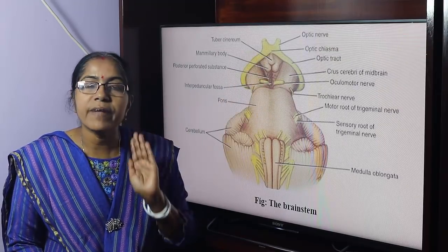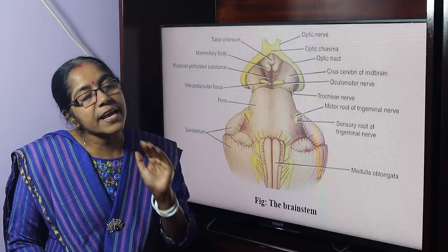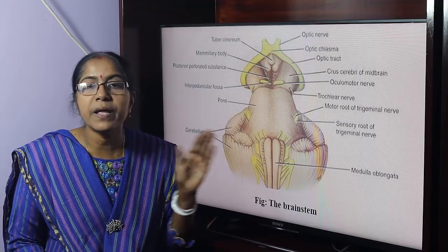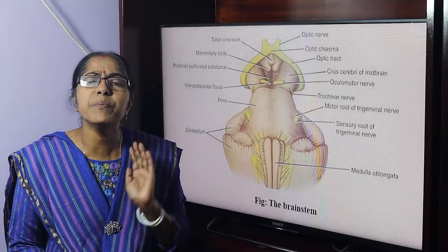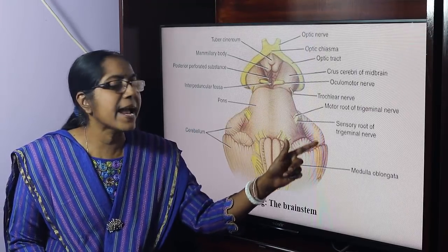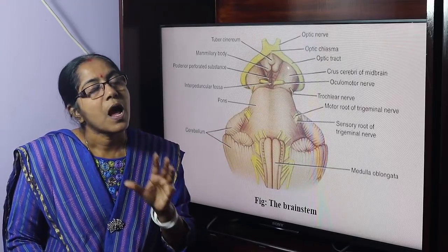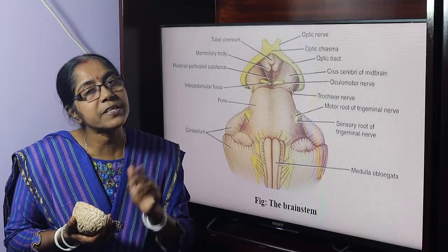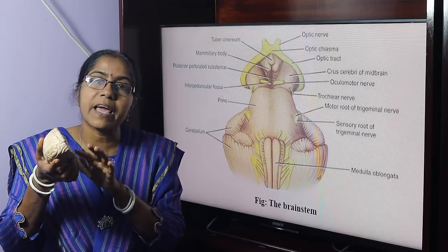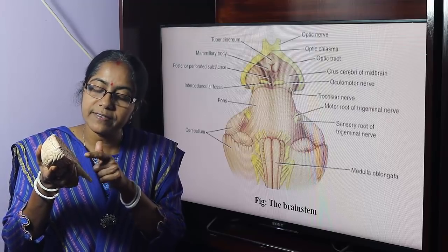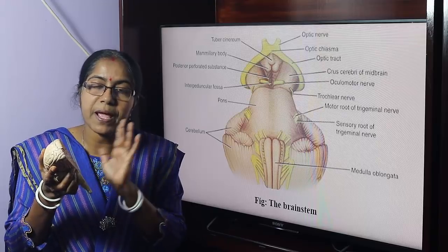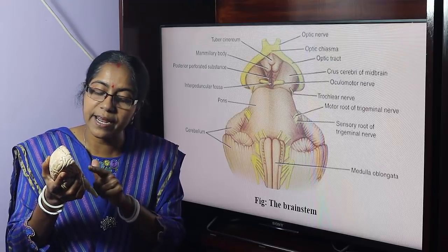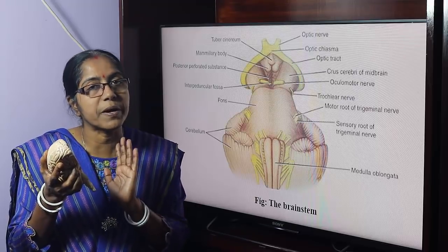The cavity of the midbrain is termed as the cerebral aqueduct. The cerebral aqueduct connects the 3rd ventricle with the 4th ventricle. The cavity of the hindbrain is termed as the 4th ventricle. The hindbrain is composed of pons, medulla, and cerebellum.